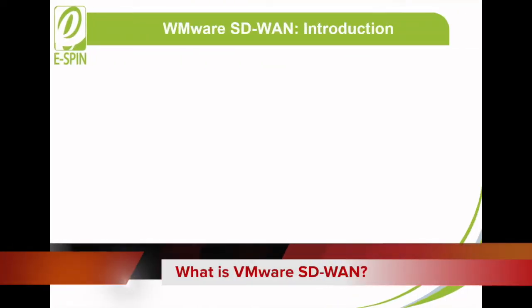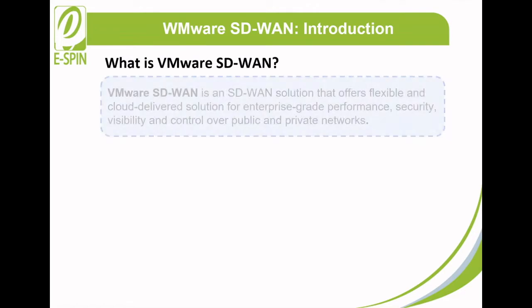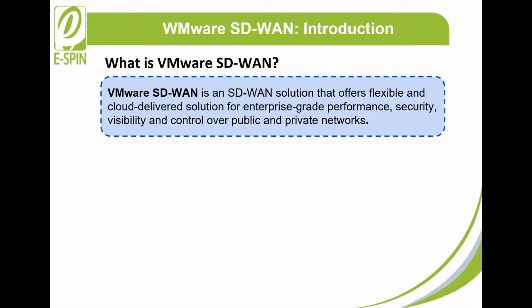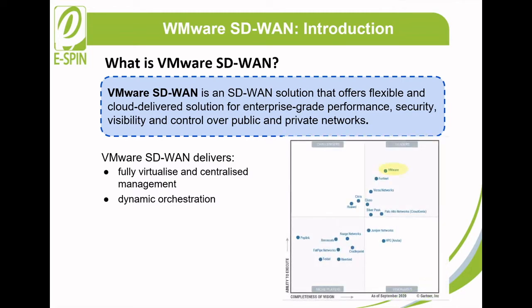Now that we have gathered the understanding on why organizations need SD-WAN, let's move to our main objective of this webinar. What is VMware SD-WAN? VMware SD-WAN is an SD-WAN solution that offers flexible and cloud-delivered solution for enterprise-grade performance, security, visibility, and control over public and private networks. It delivers fully virtualized and centralized management as well as dynamic orchestration. VMware SD-WAN is a cloud-delivered SD-WAN platform that has been named as Gartner Leader in the Gartner Magic Quadrant for WAN Edge infrastructure for four consecutive years.